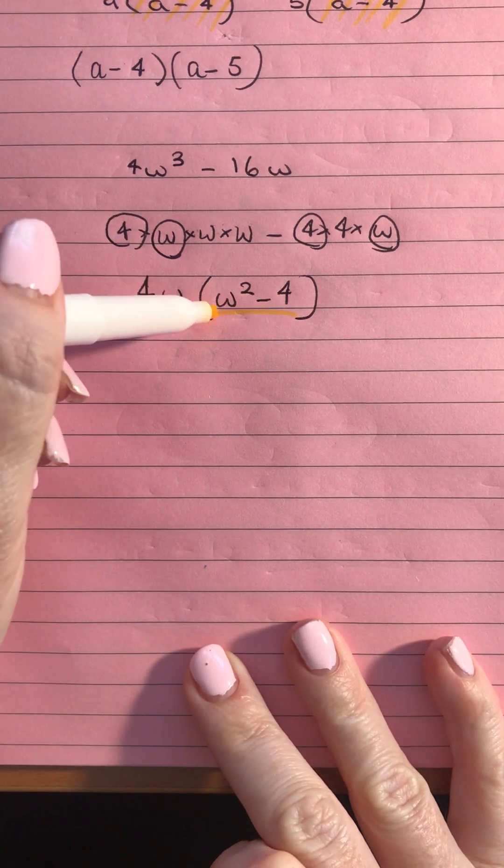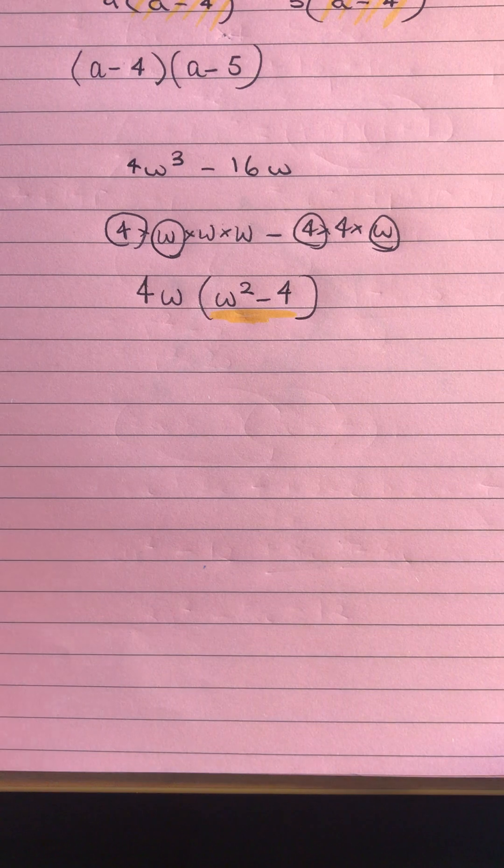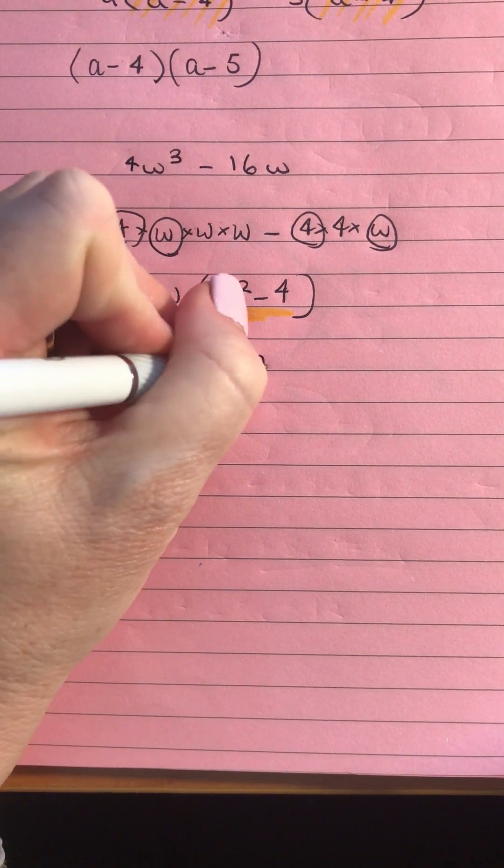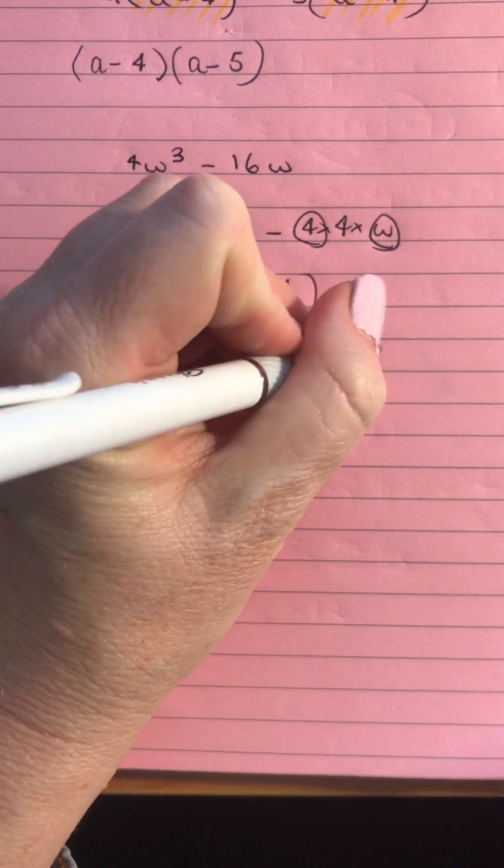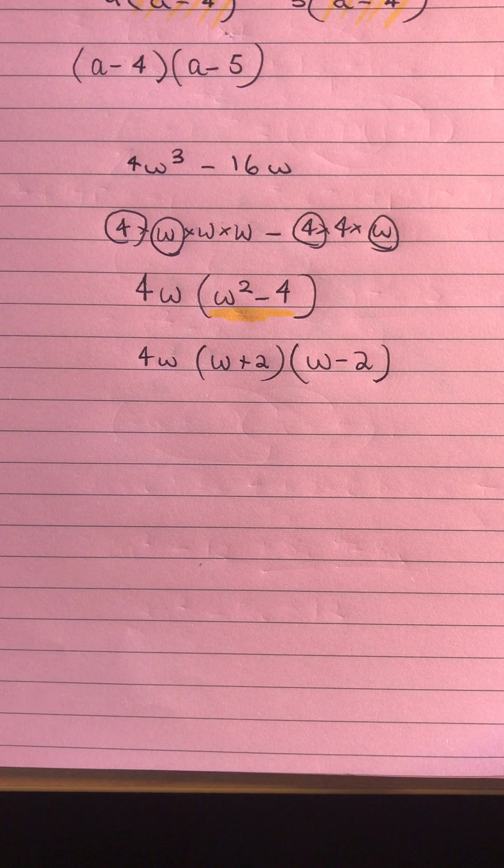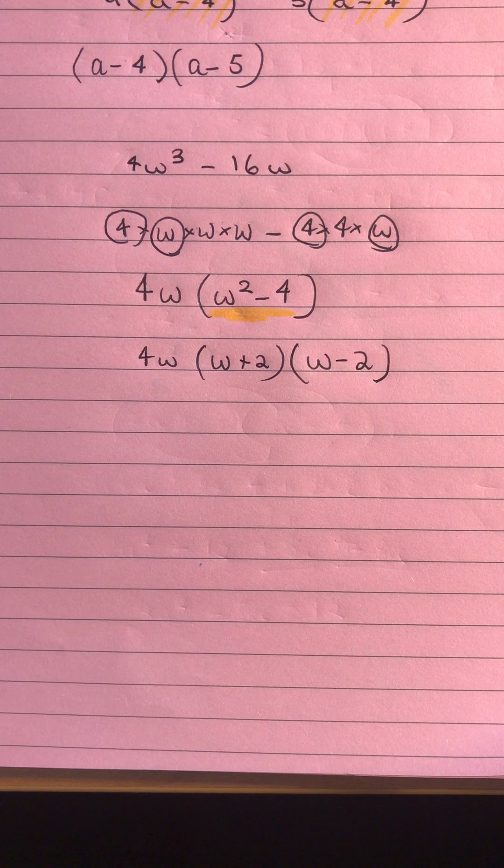So I get 4w outside of w squared take 4. Now this is where you might recognise this w squared take 4. So we can recognise that as a difference of two squares and we can actually factorise that as w plus 2 w minus 2. At this point in grade 9 we're not getting into that factorising quadratics but it's good to start recognising those patterns.